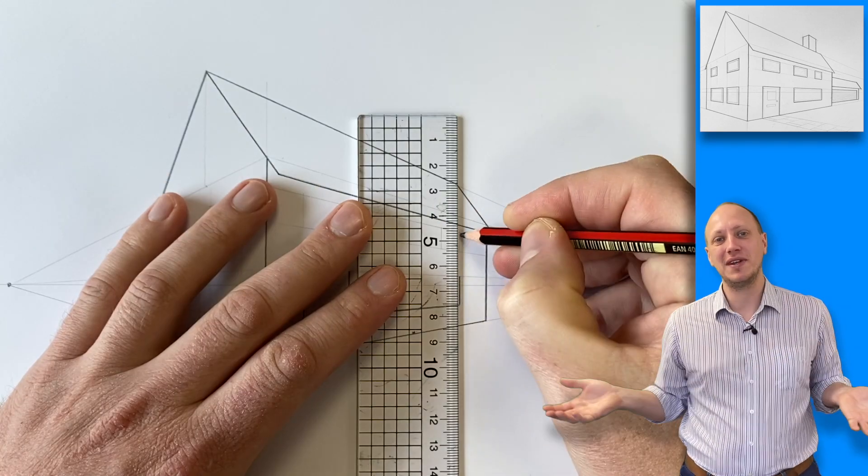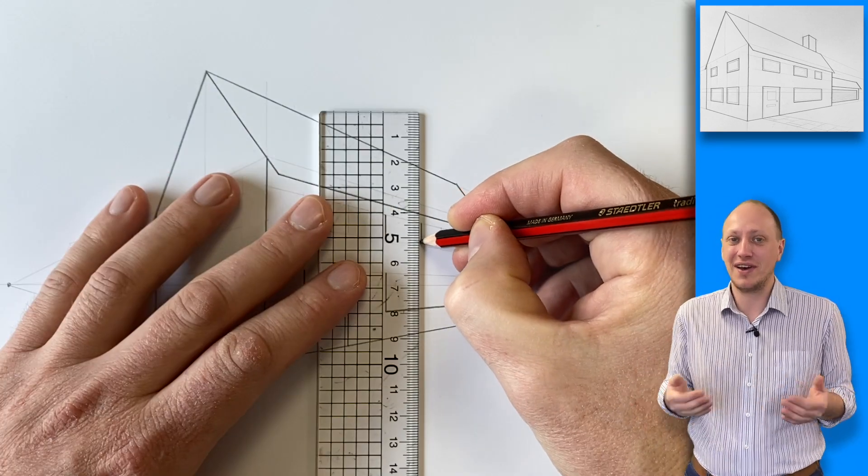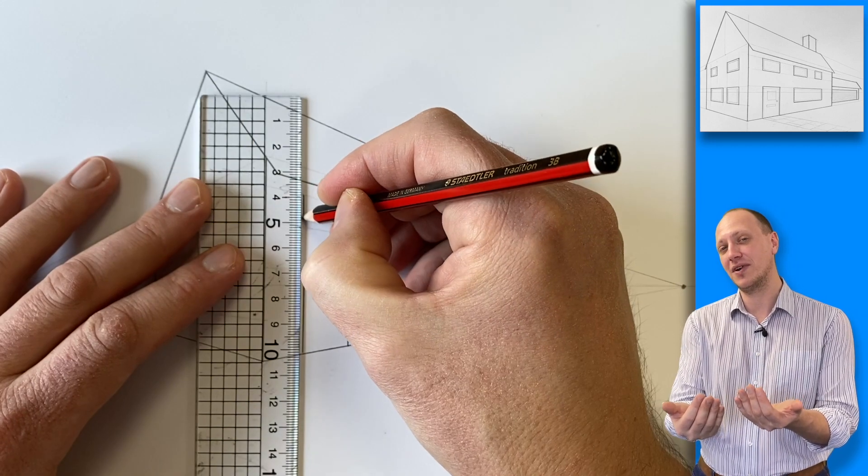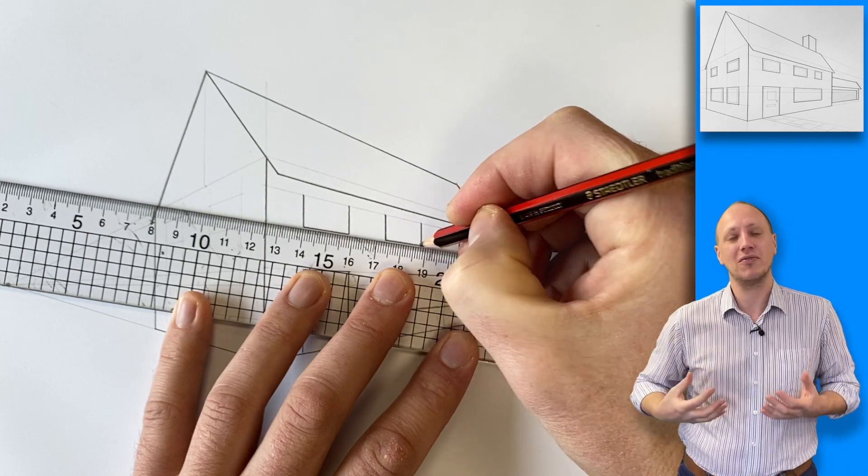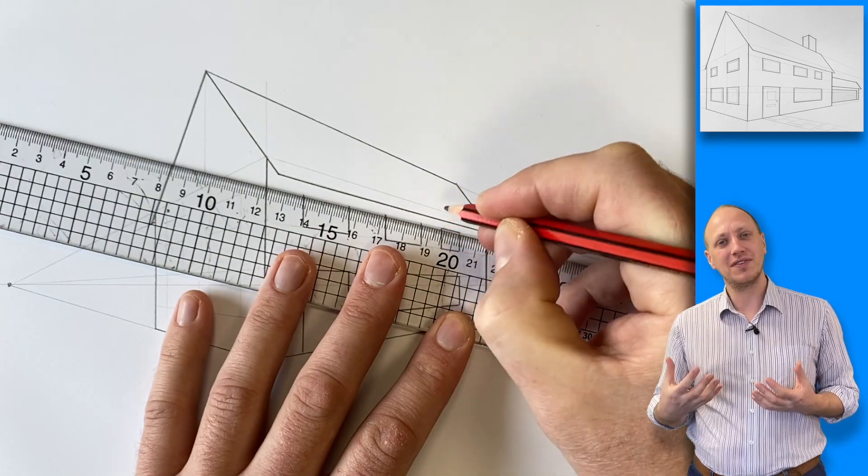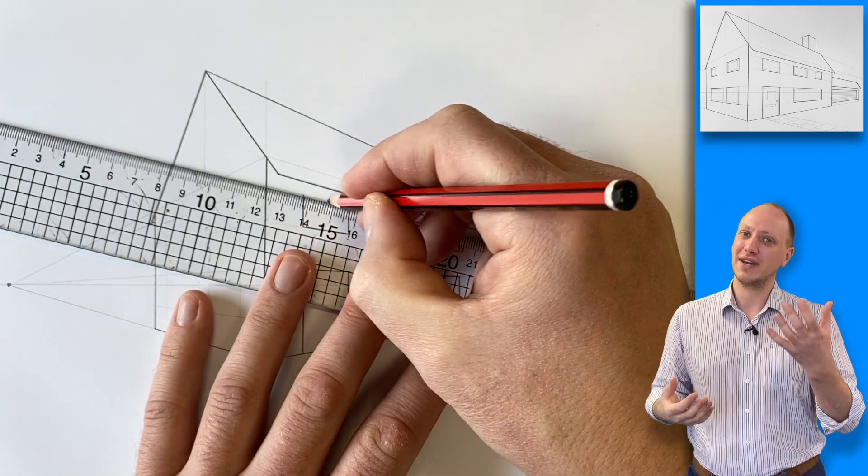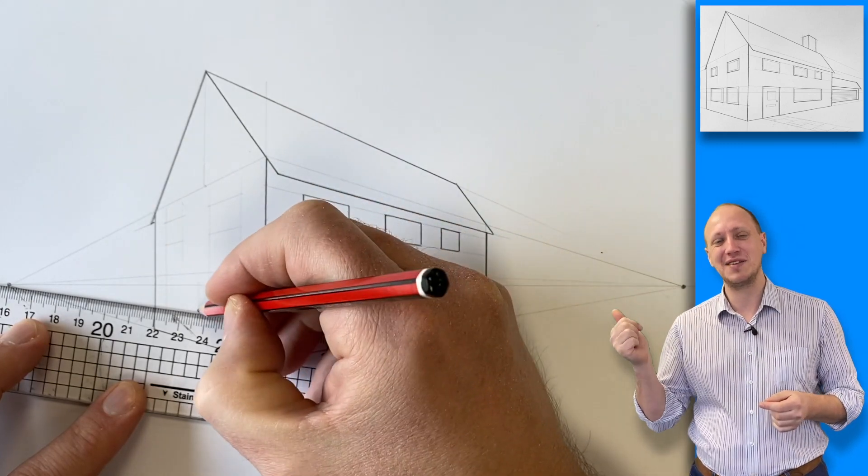And do the same with all of your windows. Make sure that the things you're happy with are now the things that stand out on your drawing. Especially now that we've got other lines on here, other construction lines that we don't really want people to see. Those ones are just there to guide and build our drawing. But now we want people to see these parts of our drawing.